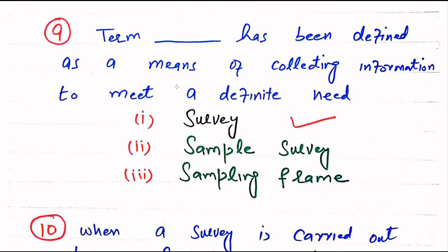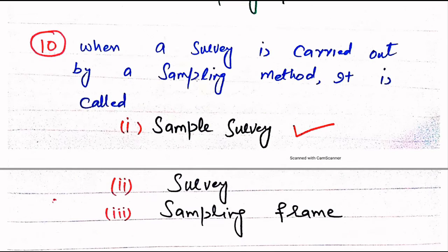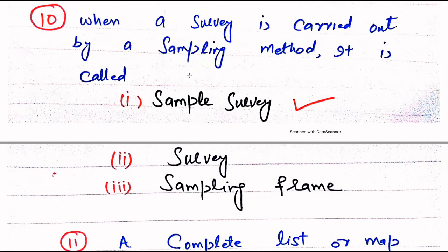Survey has been defined as a means of collecting information to meet a definite need. Because if we have a target or plan to get some information, we do this with the help of surveys. Question number 10. When a survey is carried out by a sampling method, it is called — Sample survey, Survey, or Sampling frame. The right answer is Sample survey.